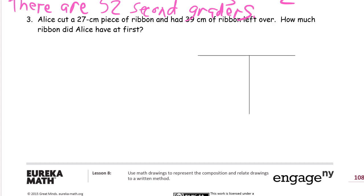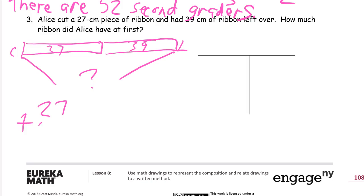Alice cut a 27-centimeter piece of ribbon and had 39 centimeters of ribbon left over. How much ribbon did she have at first? So she cut, this is what she cut, and this is what she had left over, L for left over. And what she had at first, the two put together, so before she cut it they're both together. 27 plus 39. 7 plus 9, 16. That's a 6, 6 1s and a 10, 10, 6, 16. And then we have 2 and 3, 5, one, 66. We'll draw this.